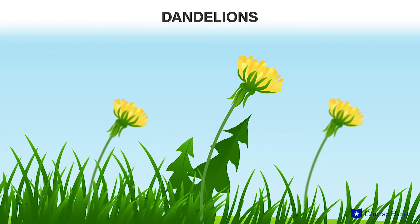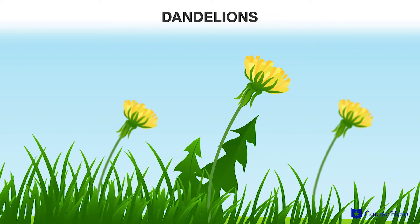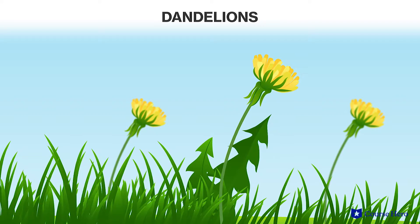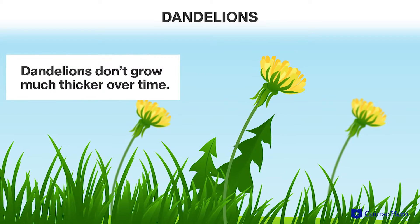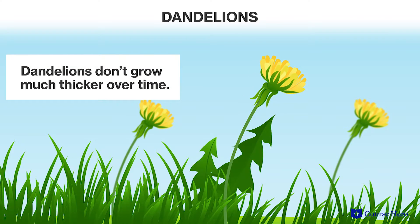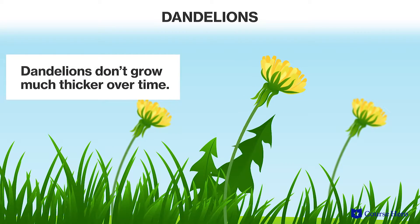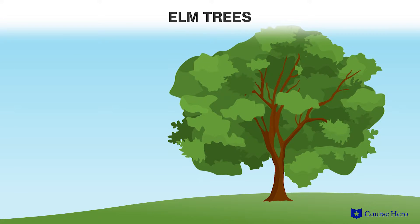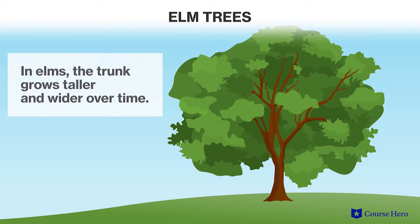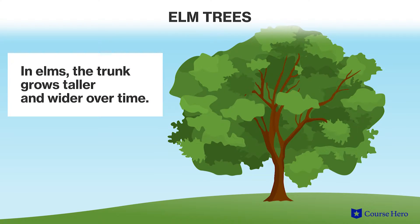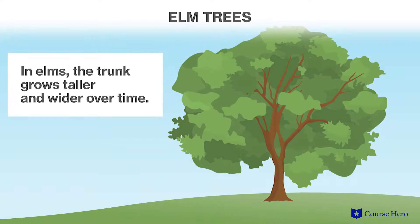In an herbaceous plant, such as a dandelion, which doesn't have a woody stem above the ground, the stem that develops in the shoot system does not grow much thicker over time. In woody plants, such as elms or cypresses, the stem or trunk grows taller and adds girth each year, with every year added shown in an age ring.